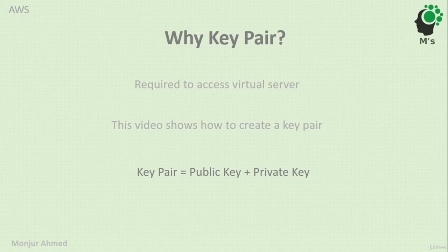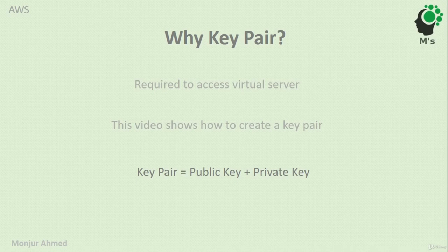The private key is the one that only I should know — no one else. A key pair is made up of two parts: private and public key. We distribute the public key because it can be known by anyone, but the private key should only be known by the owner.